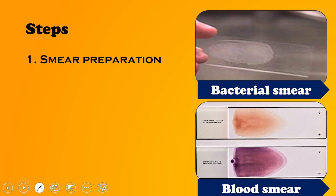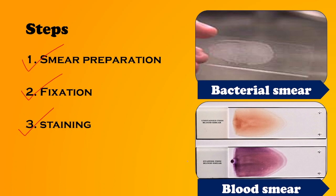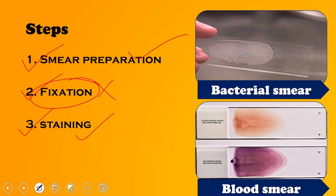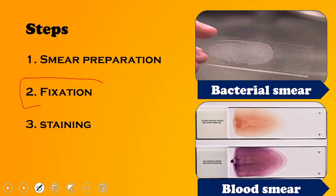After preparation of the smear, the second step is fixation — we have to fix the slide. What is the importance of fixation? If I prepare a smear and directly do staining without fixation, after applying the stain and then washing the slide, the bacterial smear will also get washed off along with the stain. We don't want that to happen, so that is why we do fixation.